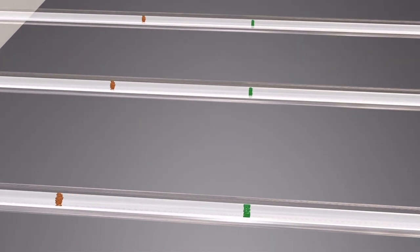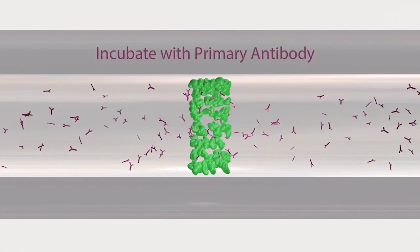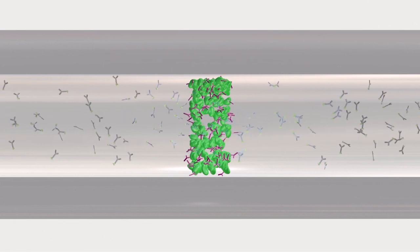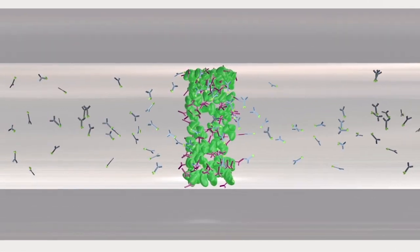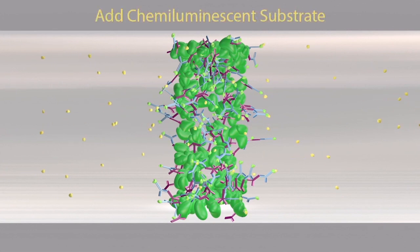This allows Sally Sue to perform an immunoassay within the capillary by first incubating with primary antibody, and then an HRP conjugated secondary antibody, followed by a chemiluminescent substrate.